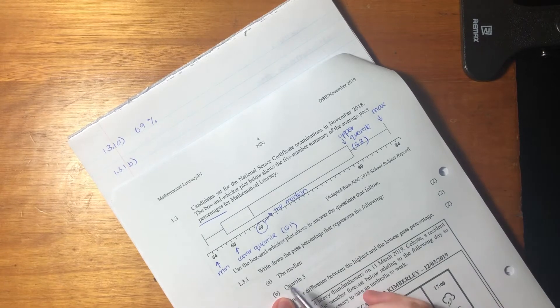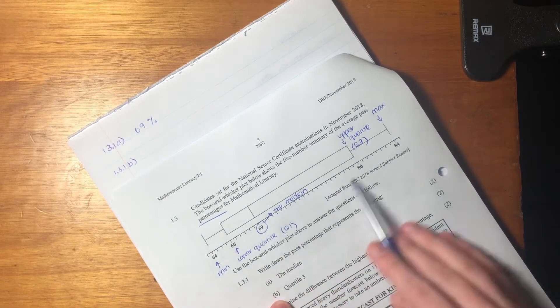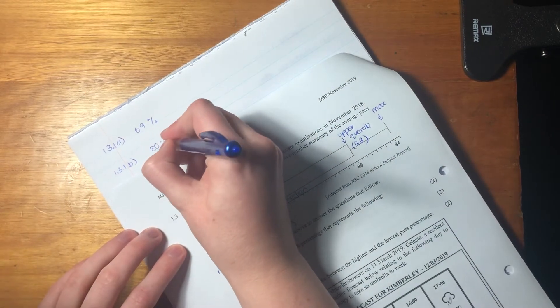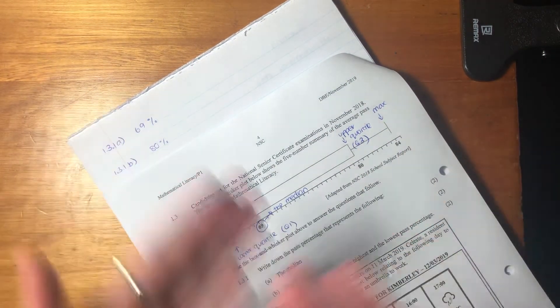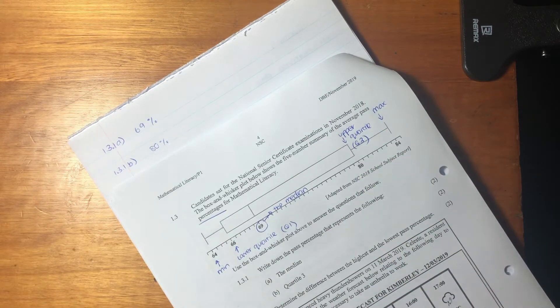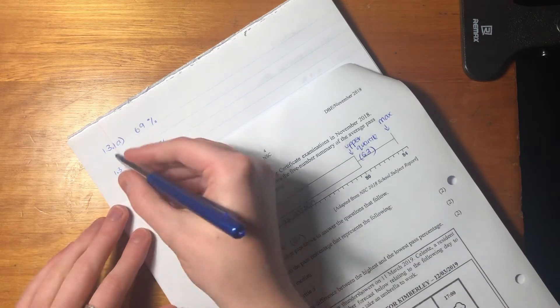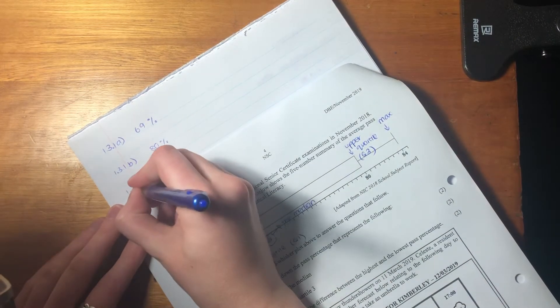Then you get quartile three, right? Quartile three is over here, 80%. You see, we're just flying through these questions because now we know how to navigate a box and whisker, we can get these questions very quickly. I must speak good English.